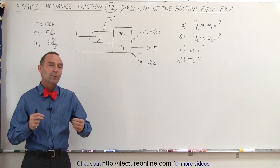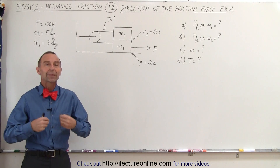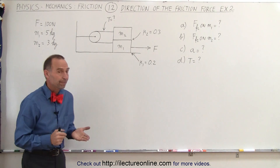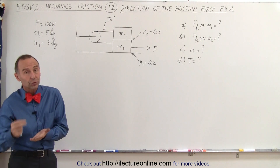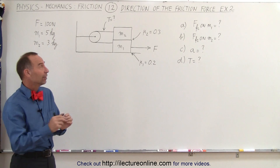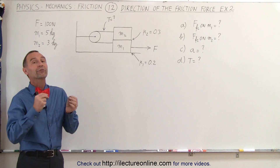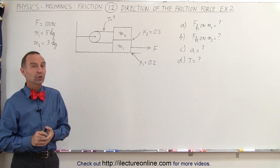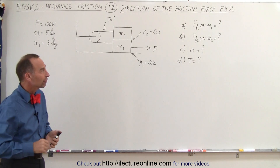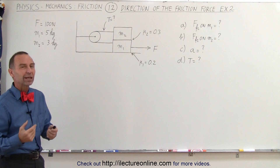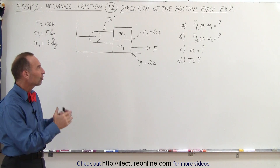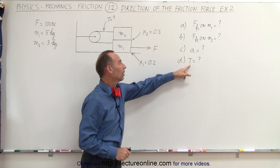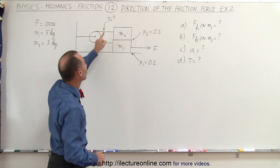Welcome to ElectronLine. Here we have more of an application type problem where we're trying to find the acceleration of the system. In order to do that we have to find the direction and magnitude of all the friction forces acting on these two objects m1 and m2, just like we did in the previous video. Let's establish all the forces on the system and then eventually find the acceleration as well as the tension in the string.